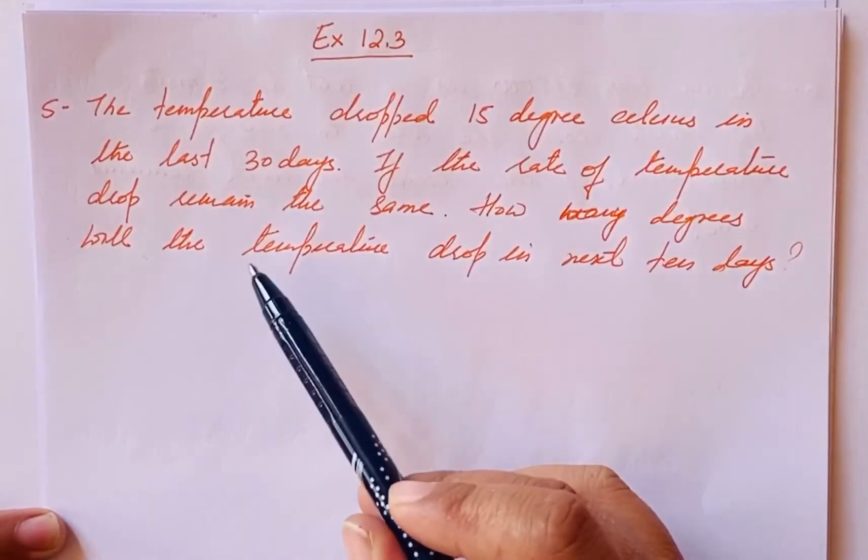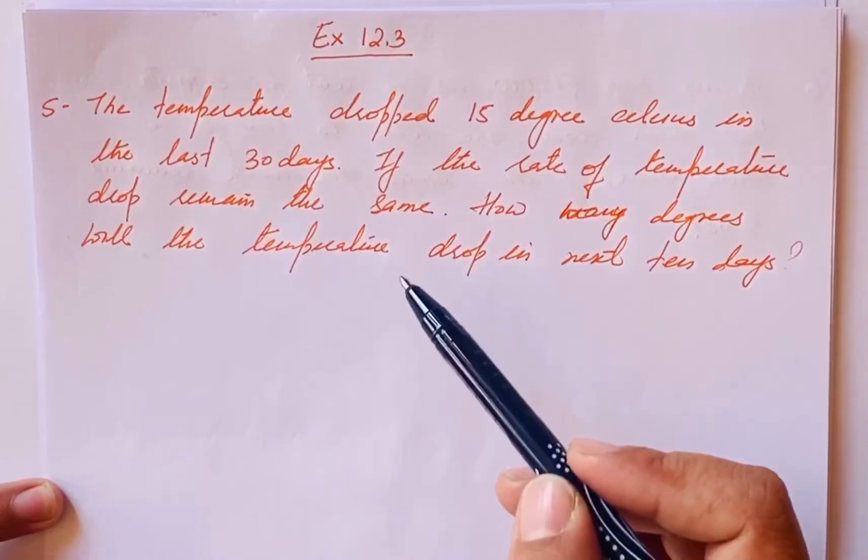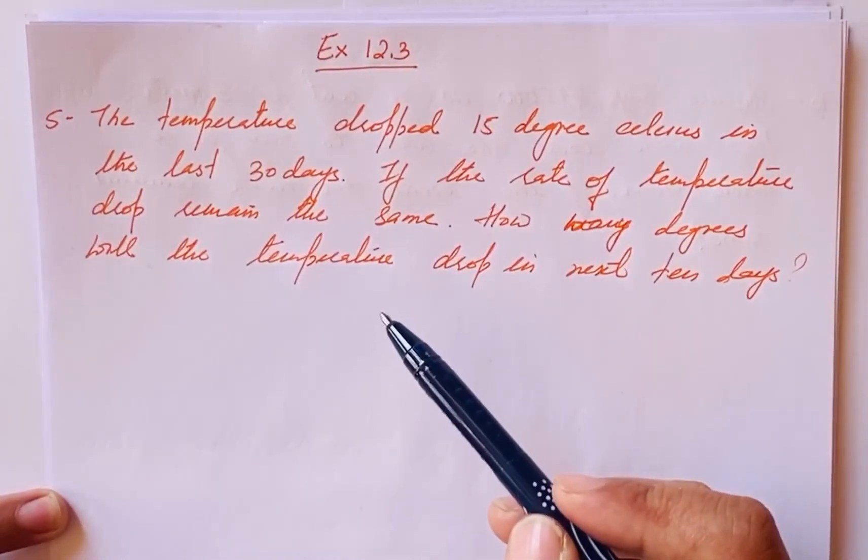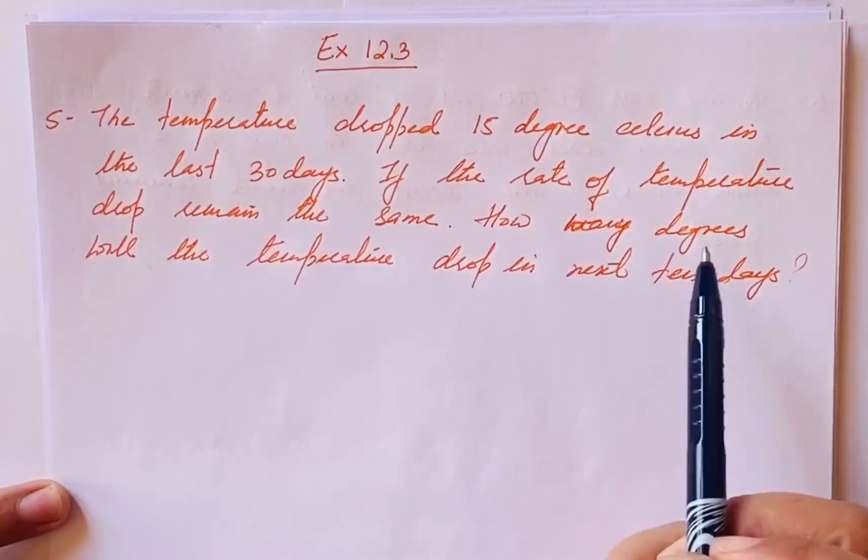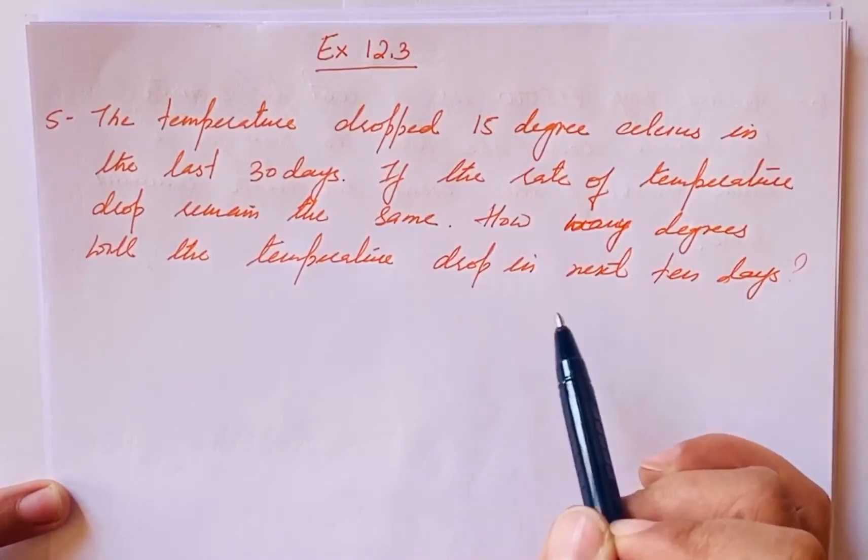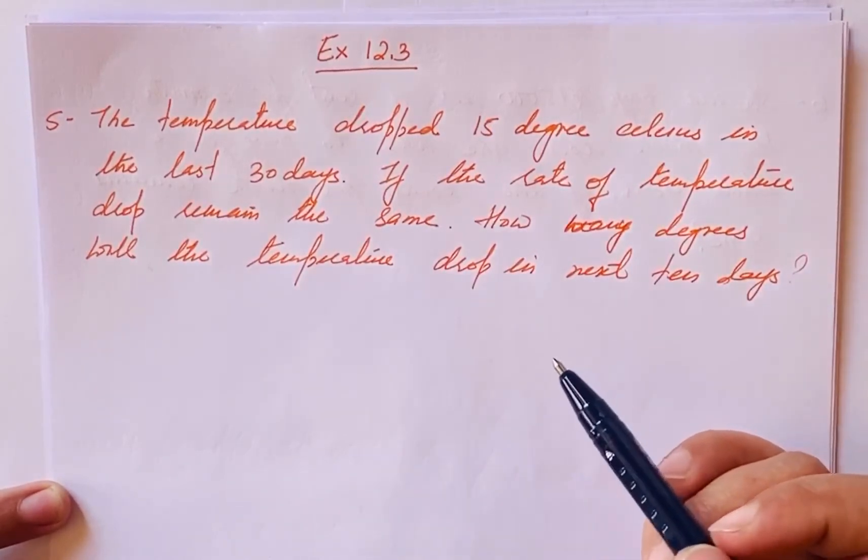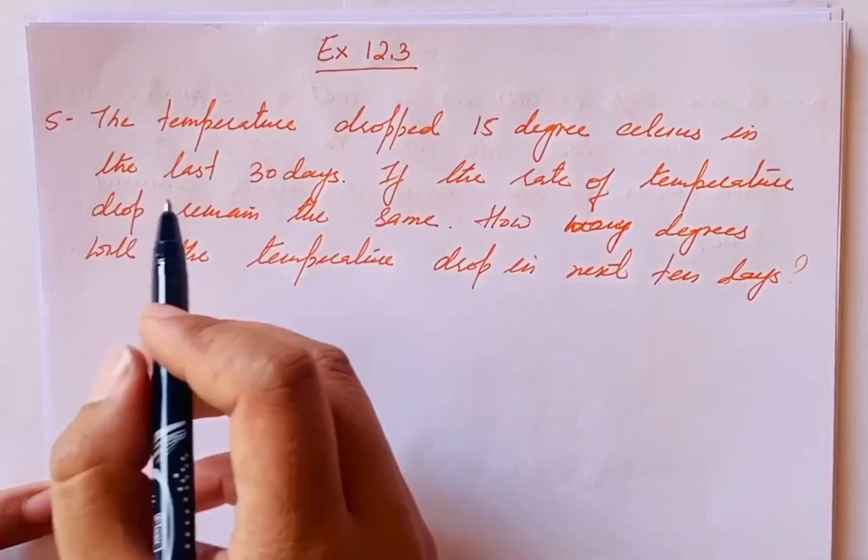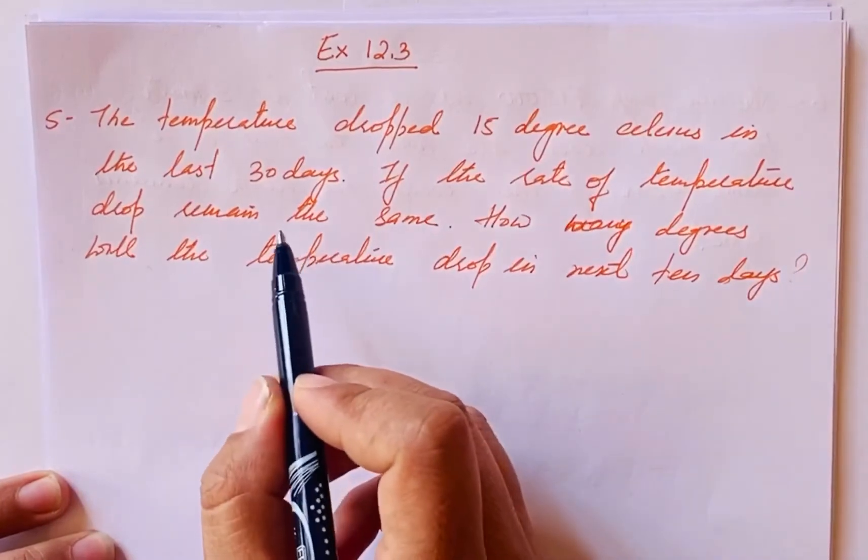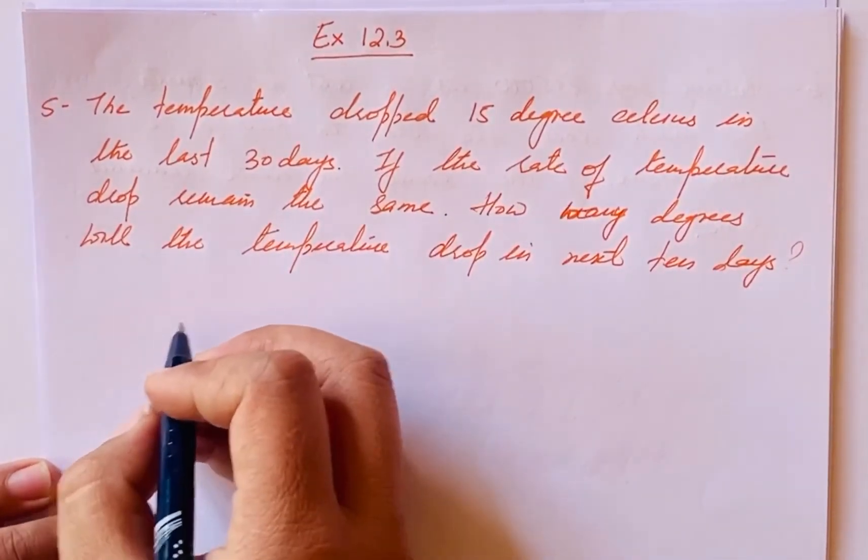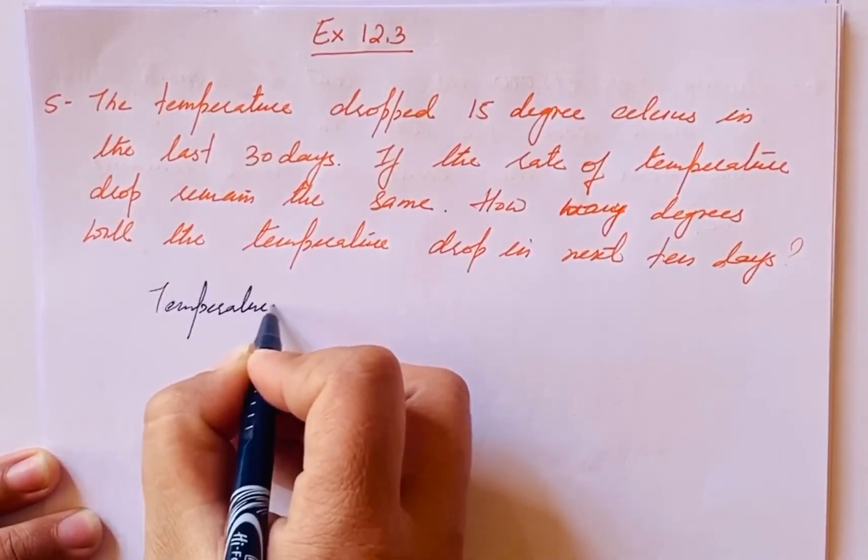If the rate of temperature drop remains the same, how many degrees will the temperature drop in the next 10 days? What's given? Temperature drop is 15 degrees, happening over 30 days. First we'll calculate the temperature drop in 30 days.